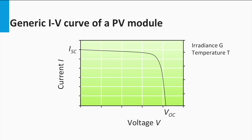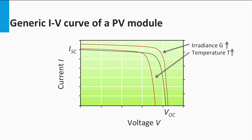For instance, if the irradiance or illumination were to increase, the IV curve would also change to a higher level. In general, a higher irradiance gives a better IV curve, but a higher temperature gives a worse IV curve, and vice versa.